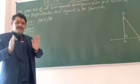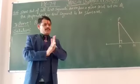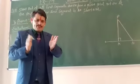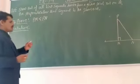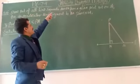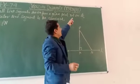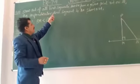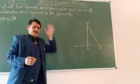This is very important question. This question proves that of all line segments drawn from a given point not on it, the perpendicular line segment is the shortest.